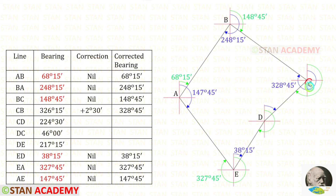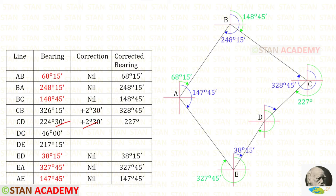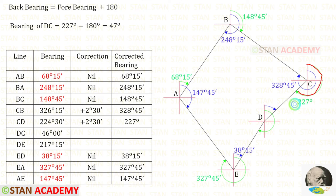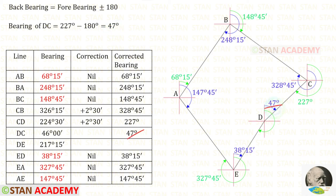Since bearings CB and CD are both taken from station C, the same correction of positive 2 degrees 30 minutes applies to CD as well. Adding this correction gives a corrected bearing for CD of 227 degrees. Using this forebearing, we find the back bearing DC. Since 227 degrees is more than 180, we subtract: 227 degrees minus 180 degrees gives 47 degrees. The correction for DC is 47 degrees minus 46 degrees, giving positive 1 degree.